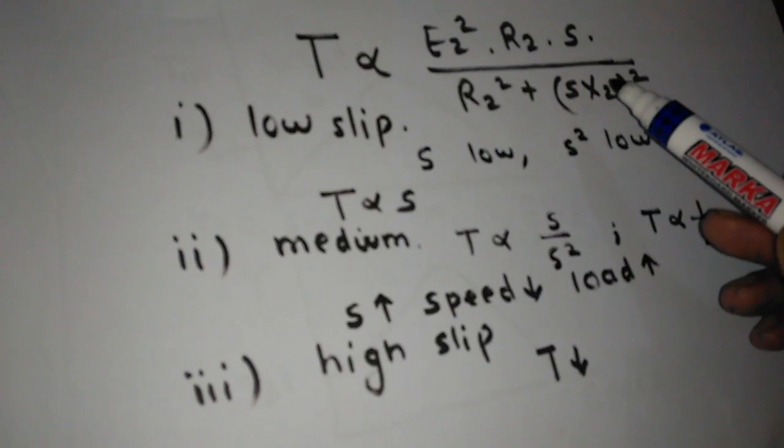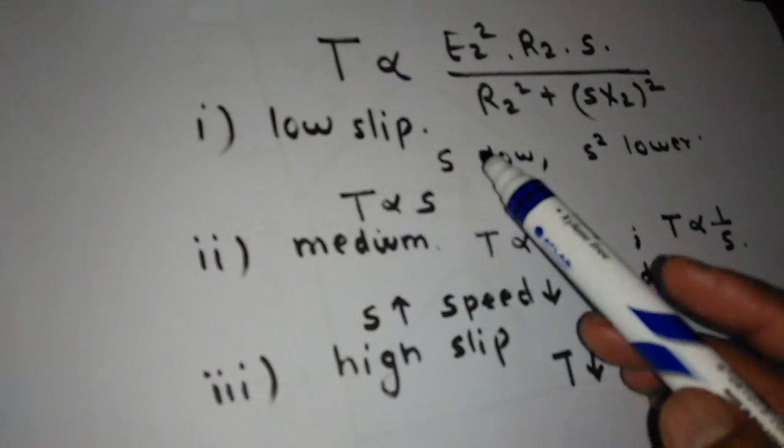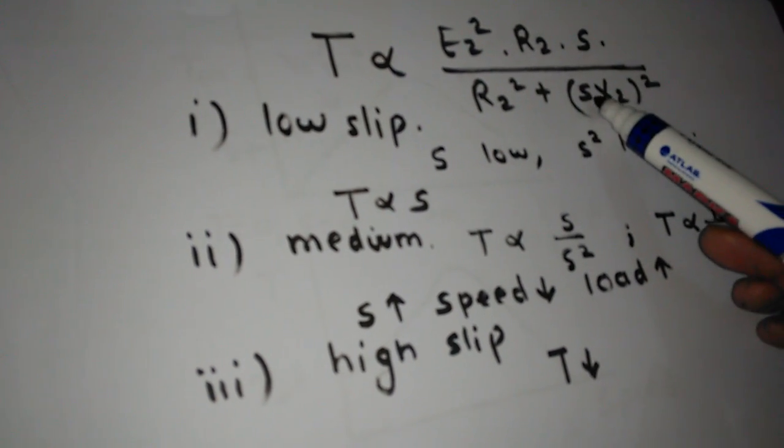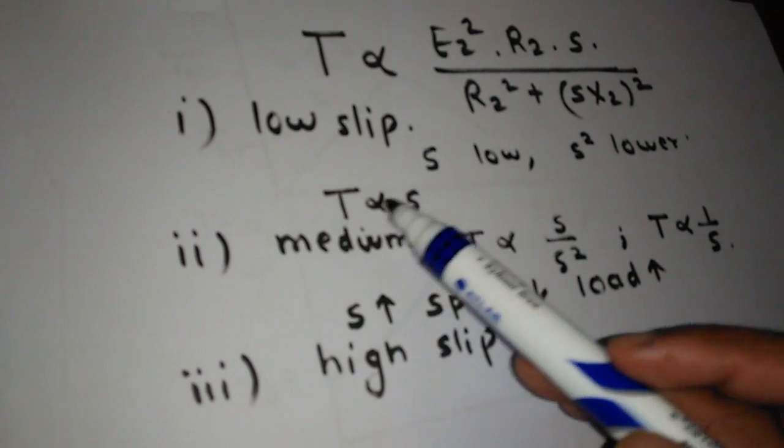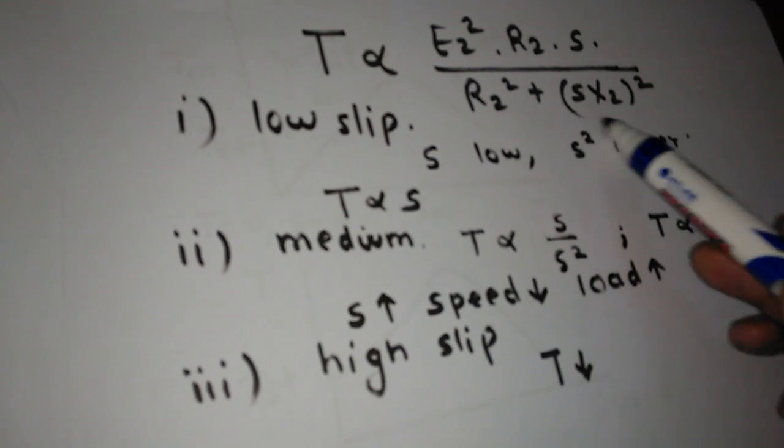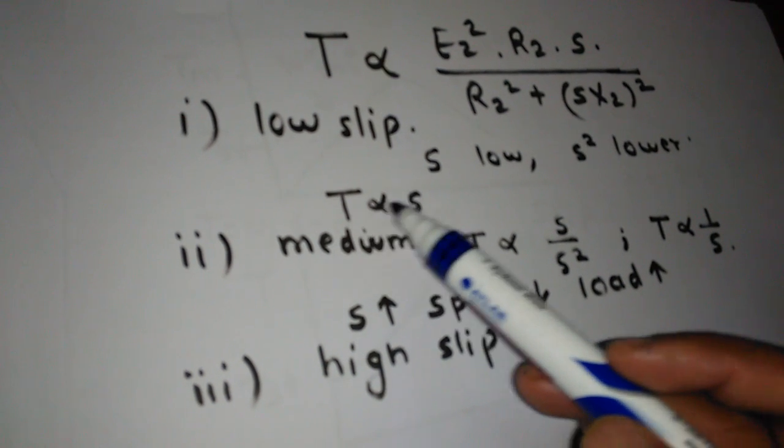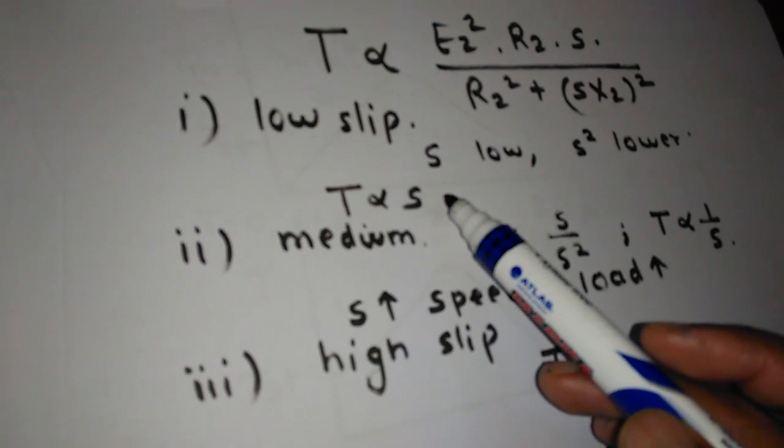We can divide three regions of slips. First is the low slip. When S is low, S squared is almost negligible compared to S. We can neglect this S squared term for low values of slip. So T is proportional to S and the relationship is linear.